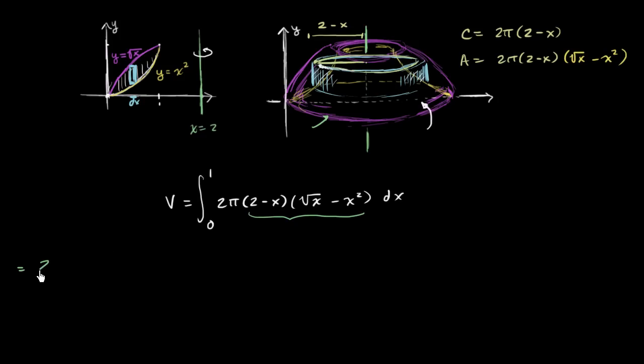So this is going to be equal to 2π times the integral from 0 to 1. I'll write it as 2x to the 1/2. It'll make it a little bit easier to take the antiderivative conceptually. So 2 times square root of x is 2x to the 1/2, and 2 times negative x squared is negative 2x squared.